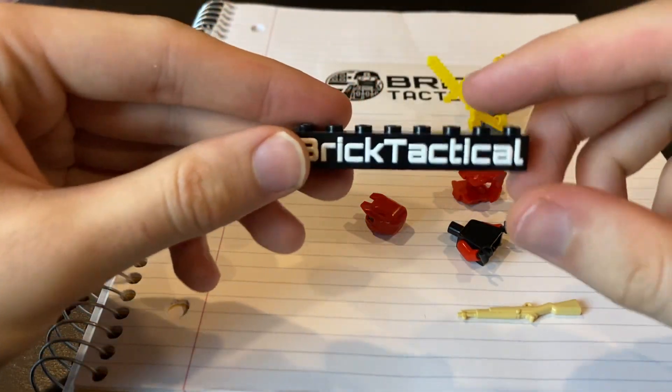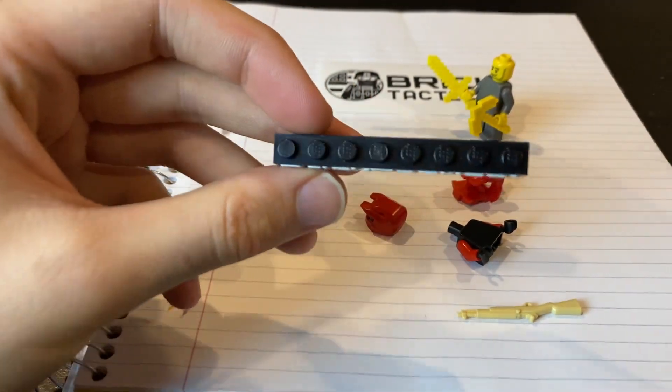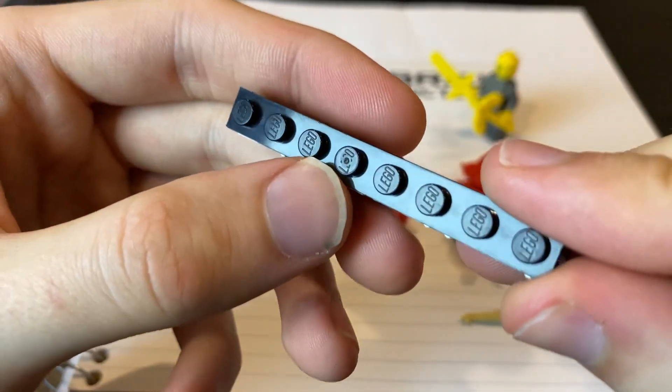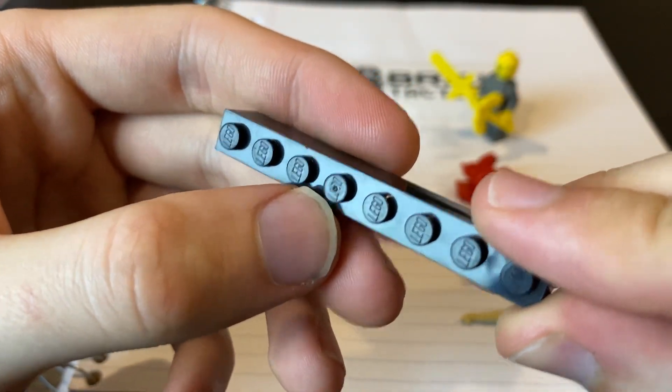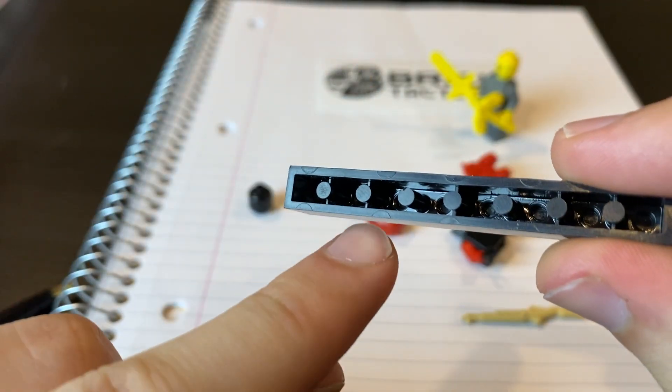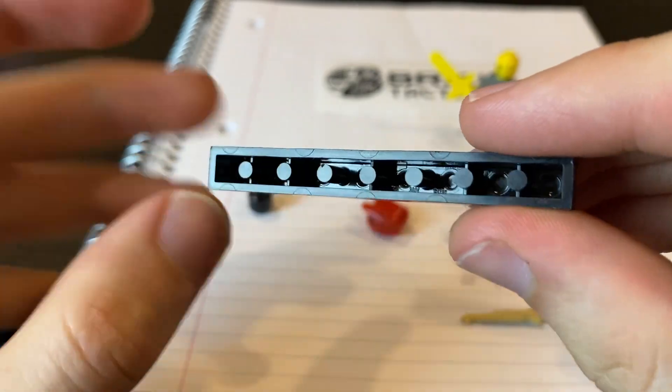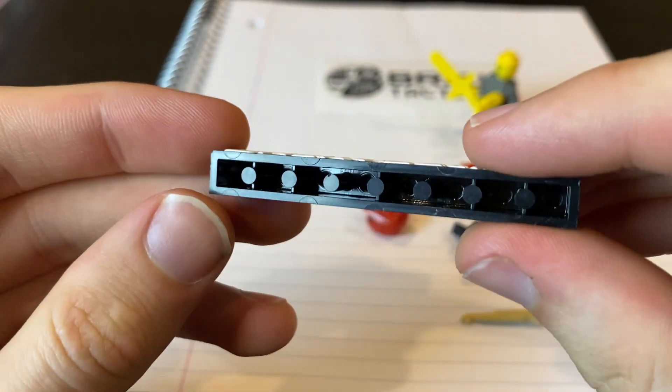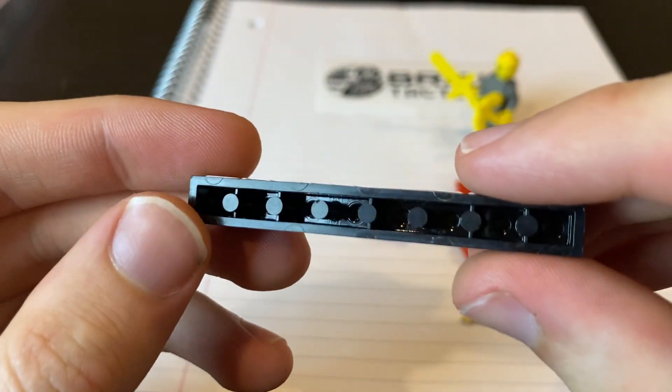I mean, you can even look at Lego bricks, for example. So here's a one by eight. And the gate is right there. See that there? And then the ejector pins, you see these marks right here? Boom, boom, boom, boom, boom. That's where the ejector pins are to knock this out of the mold.